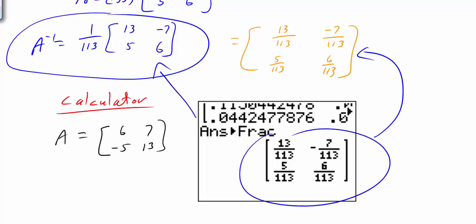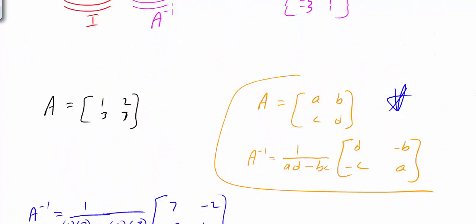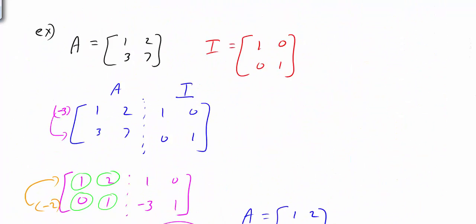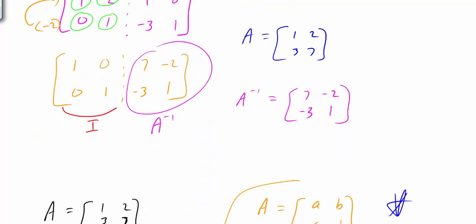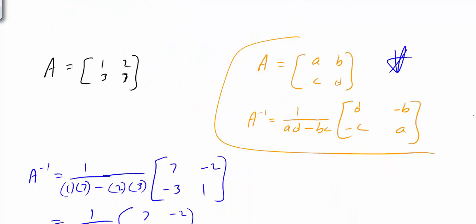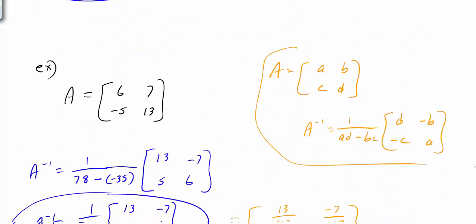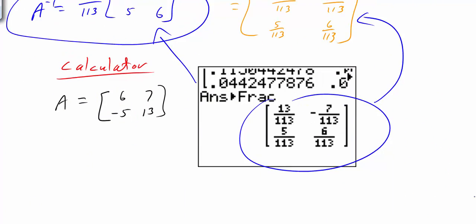So we've looked at three ways to do this. If you have a 2 by 2 matrix: one way is to set up your matrix with the identity and perform row operations to simplify your matrix to the identity — as you do that, the identity matrix becomes the inverse. Or, for a 2 by 2, use the shortcut formula to find the inverse. Or the third option: enter it into the calculator and it will find the inverse for you.